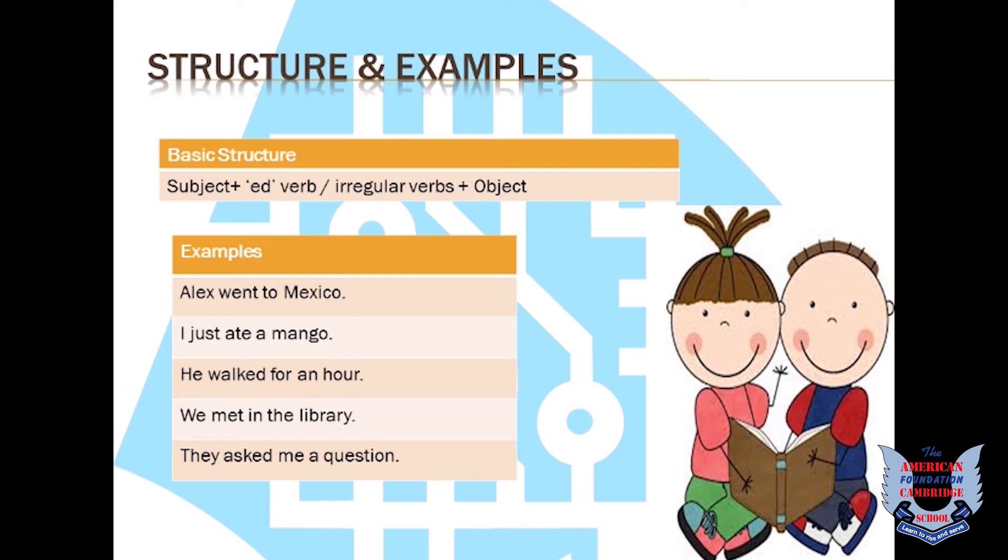For example, Alex went to Mexico. Over here, Alex is the subject. Went is the irregular form of verb go. I just ate a mango. Ate is the irregular form of verb. The present tense of ate is eat. He walked for an hour. Walked is the ed form of work.